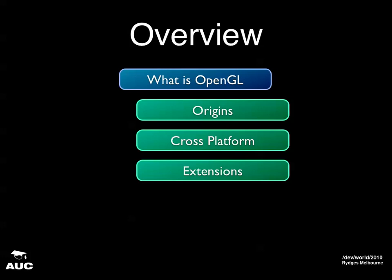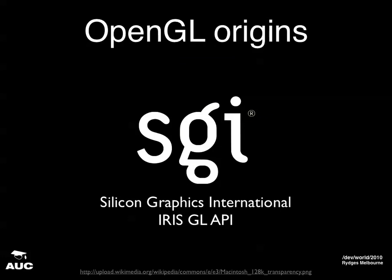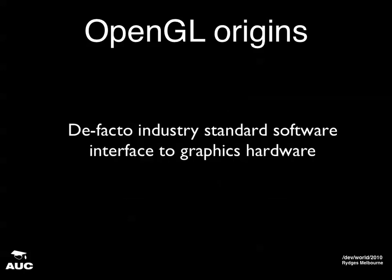So what is OpenGL? I'm going to talk about the origins, how it's cross-platform and how it's extended. OpenGL was initially made by SGI, Silicon Graphics, as an open industry standard — their IRISGL API. When hardware was new, very few people had graphics cards, and those that did didn't really know how to program them. All the graphics programmers had to write custom code for every single graphics card. SGI and a bunch of other companies started making their own APIs, and SGI was the first one adopted by lots of different companies. It's the de facto industry standard for software interface to graphics hardware.